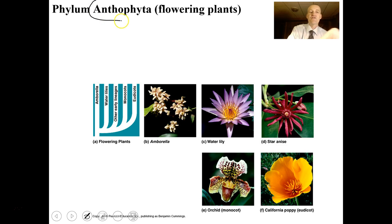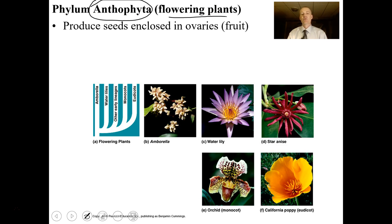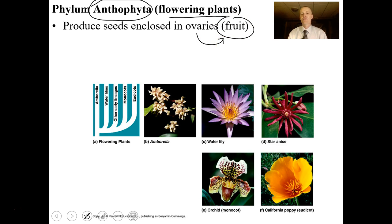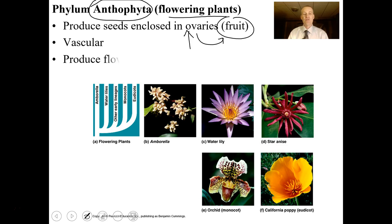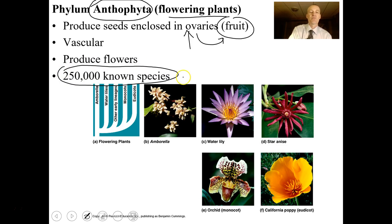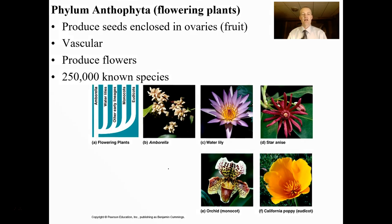Anthophyta is our last phylum of lignophytes — the flowering plants. They produce seeds enclosed in ovaries, so the ovary becomes the fruit. When you eat fruit, you're eating ovaries. These plants are vascular, produce flowers, and there are 250,000 known species, though new species are being described all the time.